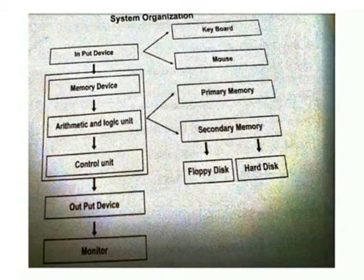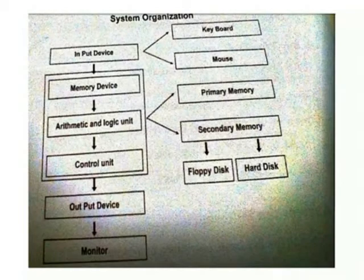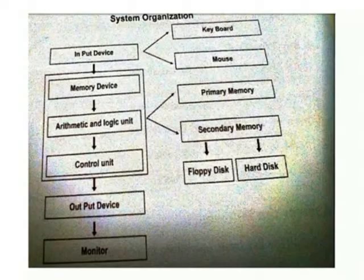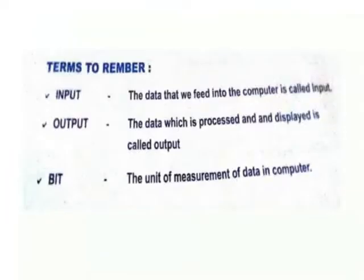System organization: input data, memory data, ALU, CU, output data, monitor. Input data — we have keyboard and mouse. ALU — we have primary memory and secondary memory, that is floppy disk and hard disk.